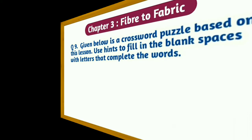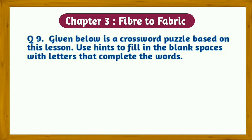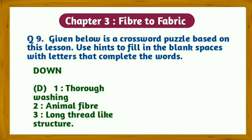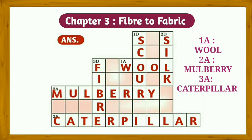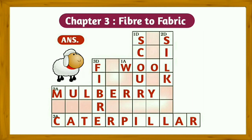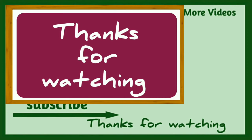Question number nine: Given below is a crossword puzzle based on this lesson. Use the hints to fill in the blank spaces. The answers are — Down: 1D: Scour, 2D: Silk, 3D: Fiber. Across: 1A: Wool, 2A: Mulberry, 3A: Caterpillar. The crossword puzzle is shown on the screen. Thanks for watching this video till the end.